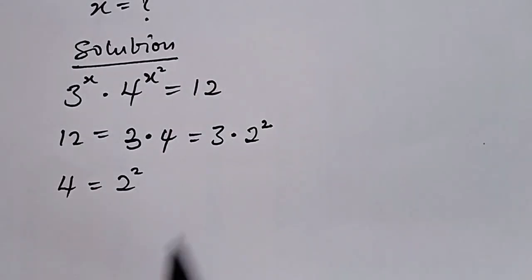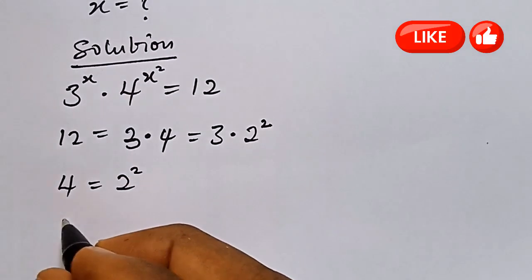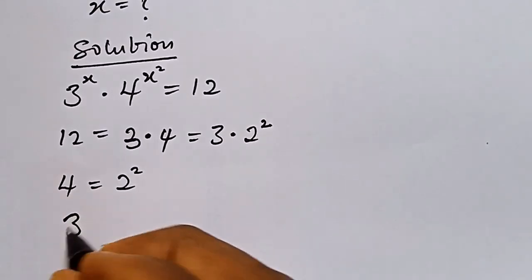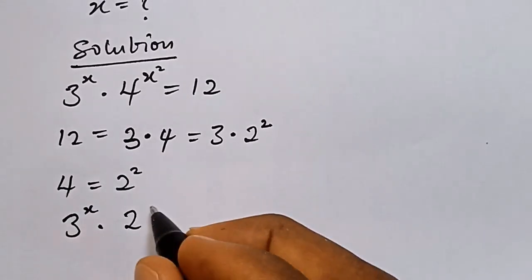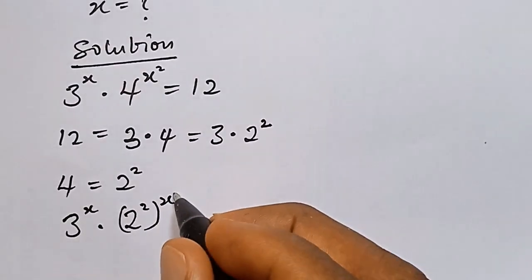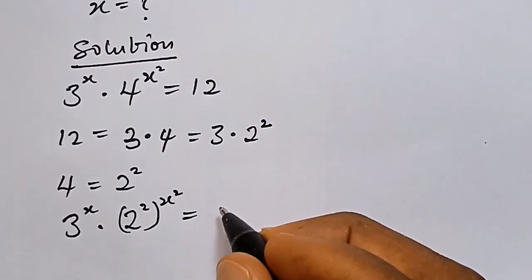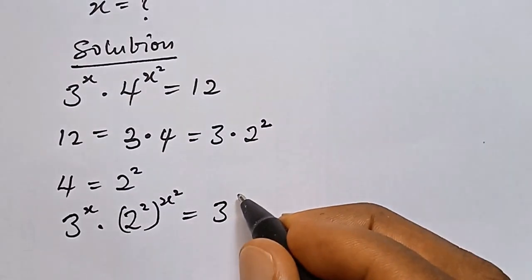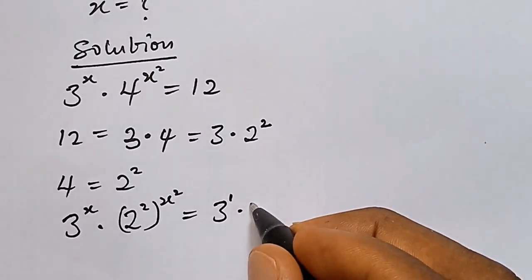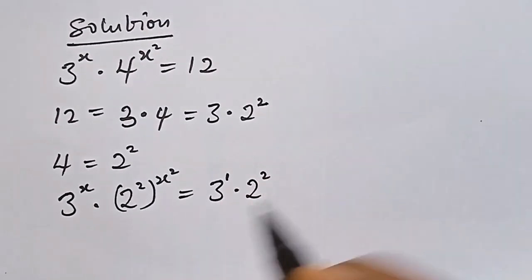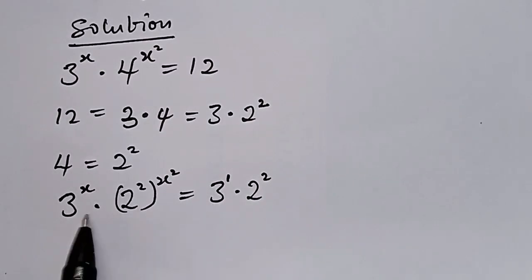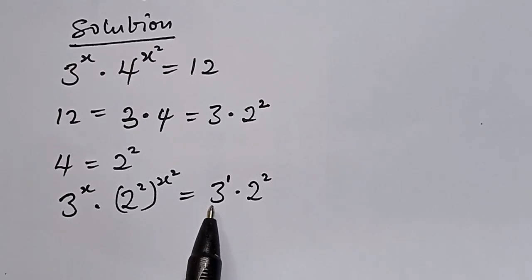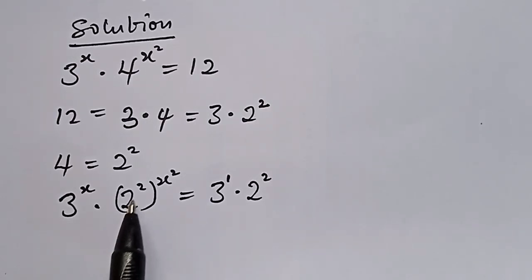We apply this back into our expression, so we have 3 raised to power X multiplied by 2 raised to power 2, then raised to power X squared, which equals 3 raised to power 1 multiplied by 2 raised to power 2. We can then divide all through — this expression by 3 raised to power 1 and 2 raised to power 2X squared.